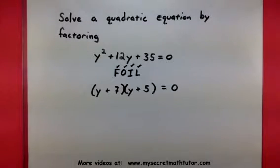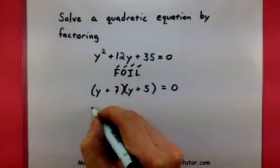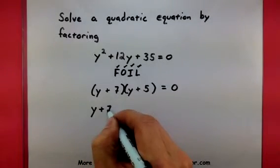All right. Now, once you have your quadratic factored, you want to take each of these factors here and set each of those equal to 0.